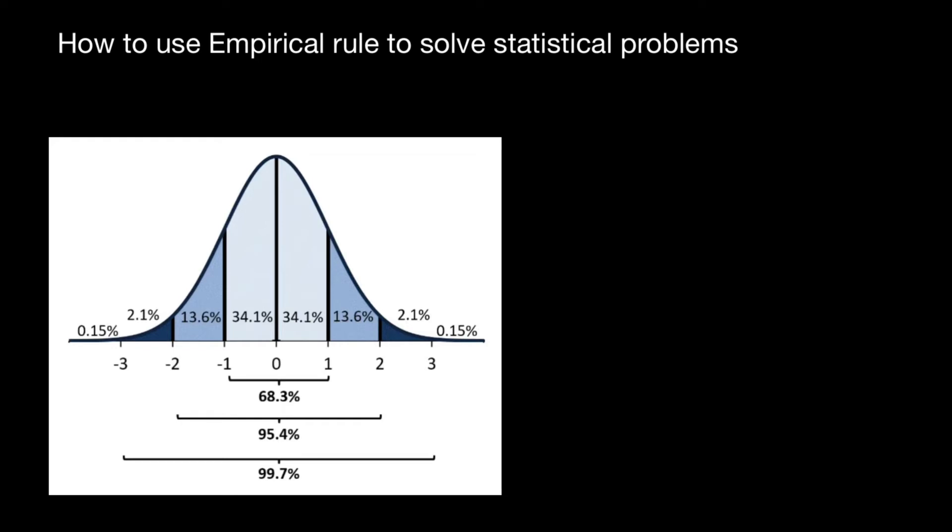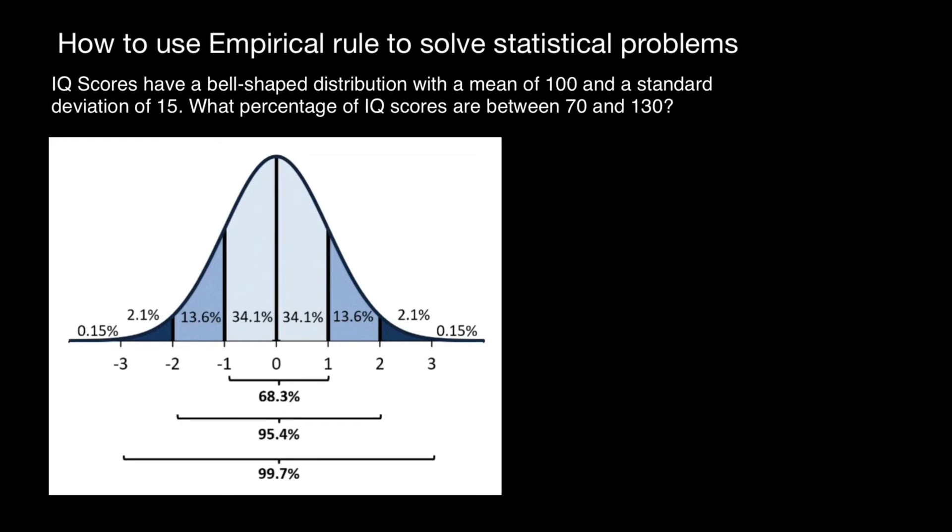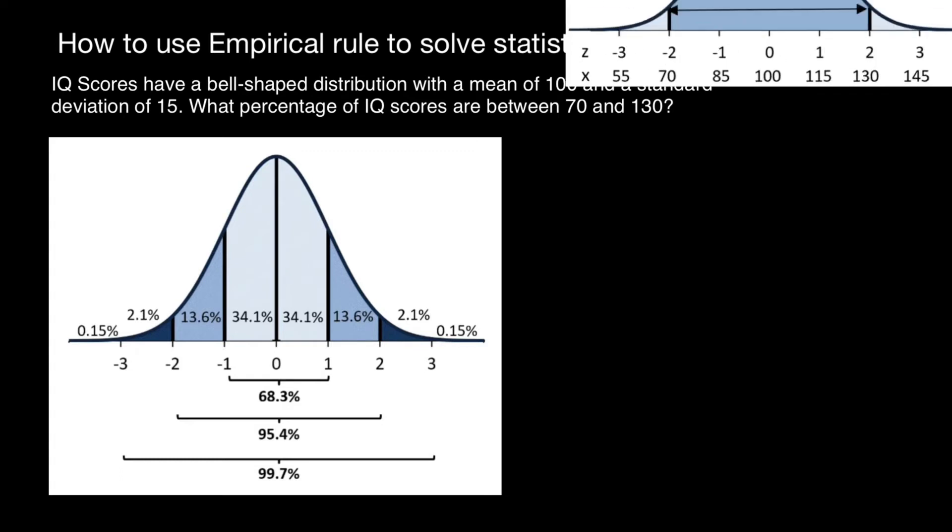Here is the problem. IQ scores have a bell-shaped distribution with a mean of 100 and a standard deviation of 15. What percentage of IQ scores are between 70 and 100?